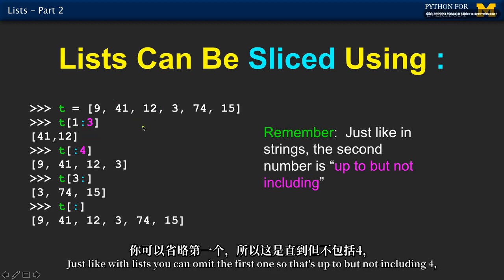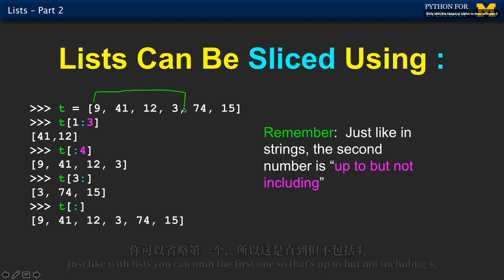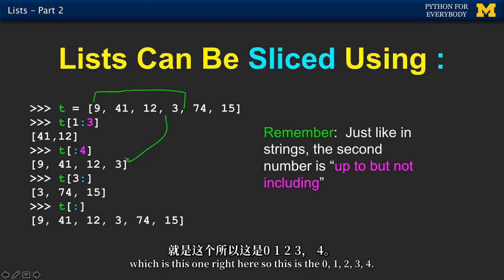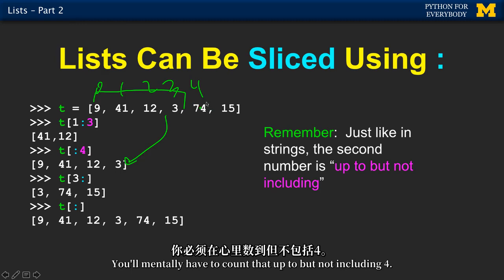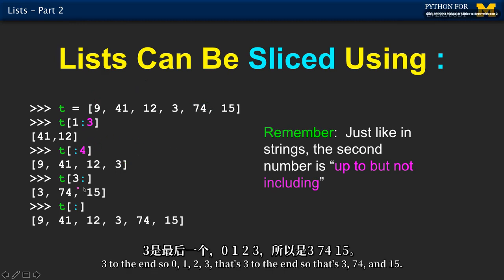Just like with lists, you can omit the first one. So that's up to but not including four, which is this one right here. You'll mentally have to count — zero, one, two, three, four — up to but not including four, that's that one. Three to the end — zero, one, two, three — that's three to the end.